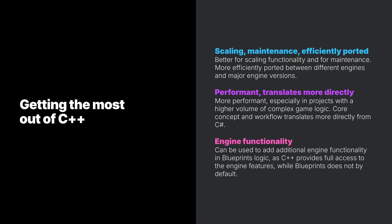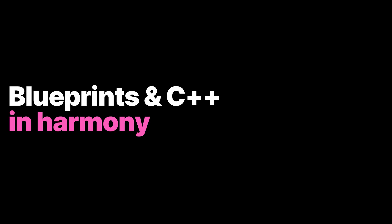Some of C++'s greatest strengths are: better for scaling functionality and maintenance; more efficiently ported between different engines and major engine versions; more performant, especially in projects with a higher volume of complex game logic; core concepts and workflow translate more directly from C#; and C++ can be used to add additional engine functionality in blueprints logic, as it provides full access to engine features which blueprints does not by default. Always keep in mind that blueprints and C++ are designed to work in harmony.